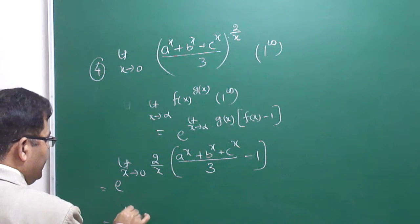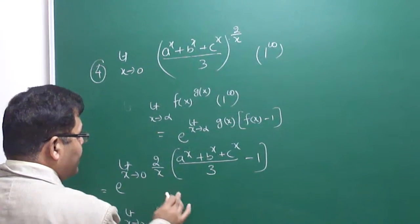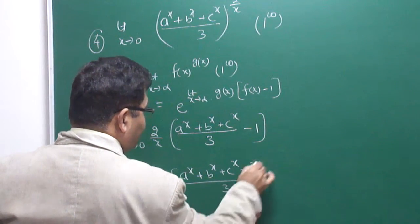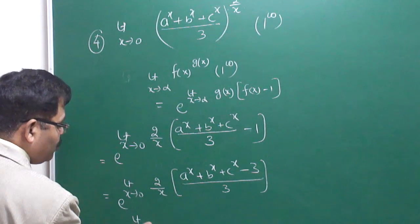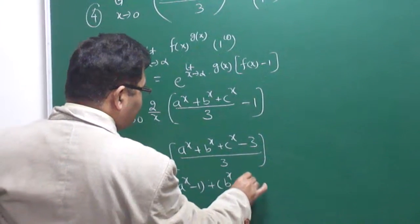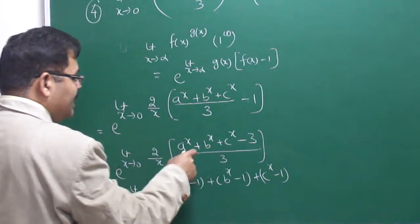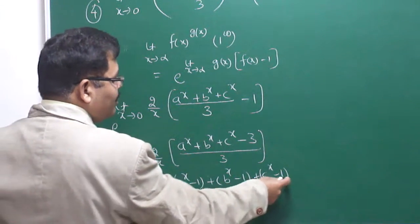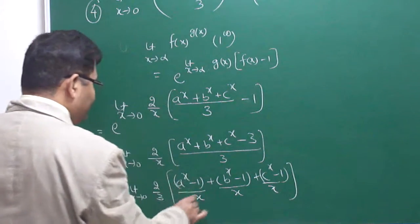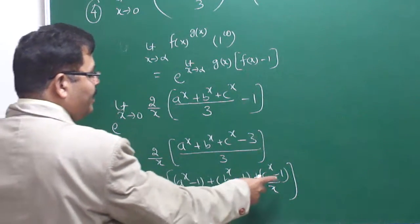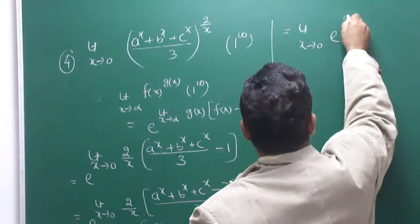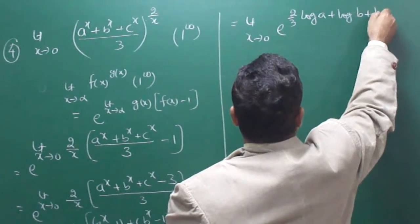Rewriting: the exponent becomes limit x→0 of (2/x) · (a^x + b^x + c^x − 3)/3, which equals limit x→0 of (2/3) · ((a^x − 1)/x + (b^x − 1)/x + (c^x − 1)/x). The minus 3 distributes as minus 1 to each of the three terms. Each piece is now in the standard form (a^x − 1)/x, so applying the formula gives (2/3)·(log a + log b + log c).